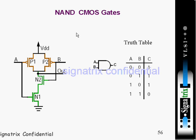Now you can see a NAND gate — how to implement a NAND gate at transistor level using CMOS technology. For that, you have to use two NMOS transistors in series, and as an exact replica and inverse, you have to use two PMOS transistors in parallel in order to implement the NAND gate functionality.